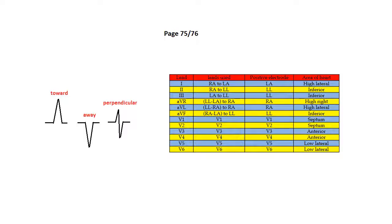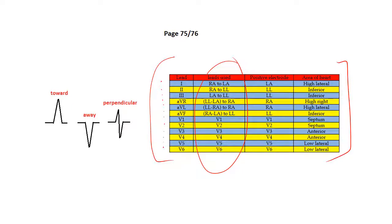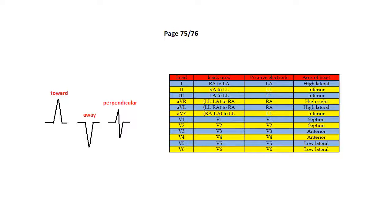This chart shows the 12 different leads: 1, 2, 3, AVR, AVL, AVF, V1, V2, V3, V4, V5, and V6. Lead 1, for example, uses the right arm and left arm leads, comparing voltage at those two places. The result tells you what's happening on the high lateral wall. This chart is confusing at first, but it will help as you work through the material.